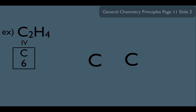Remember, carbon is in column 4 in the periodic table, so it has a valence number of 4. So that means each carbon here would have 4 valence electrons.